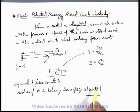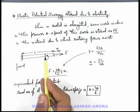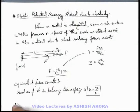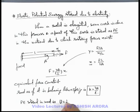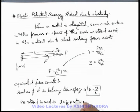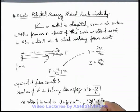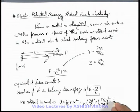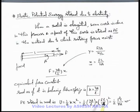If its force constant is taken as YA/L and the rod is elongated by a distance x, it will also store some potential energy. So we can say at elongation x the potential energy stored in the rod is U equals half kx², which we have already studied for a spring. On substituting the values, we get half times YA/L times (FL/YA)², which simplifies to half F²L/YA. This is the expression for potential energy stored in the material of the rod, calculated by its equivalent spring analogy.